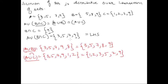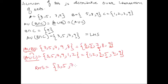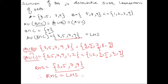We need the common elements between A union B = {3, 5, 7, 8, 9} and A union C = {1, 2, 3, 5, 7, 9}. The common elements are 3, 5, 7, and 9. So RHS = {3, 5, 7, 9}, which is the same as the LHS. Therefore RHS equals LHS, and we have proved the distributive property for case 1.